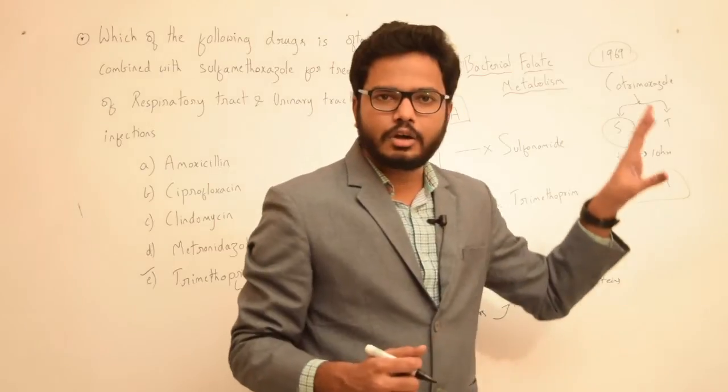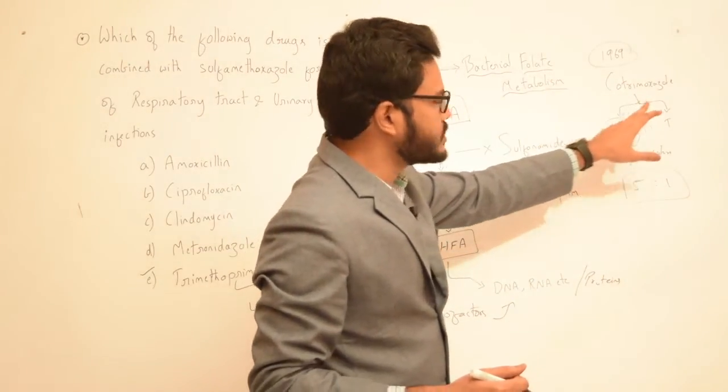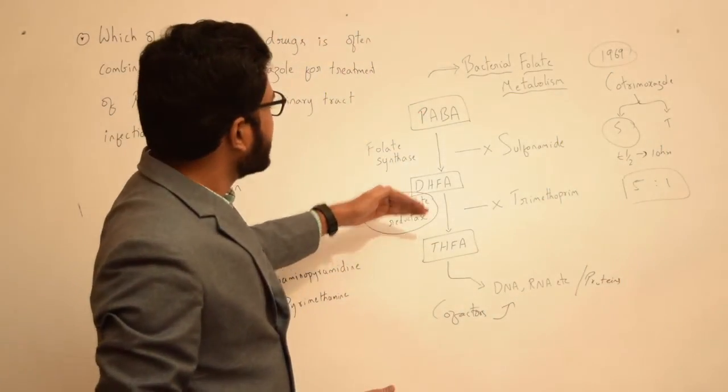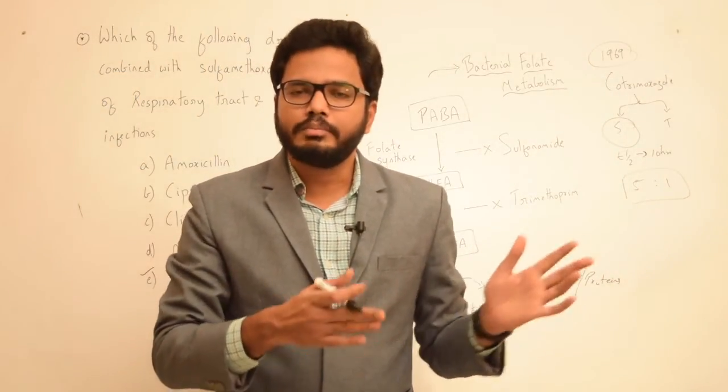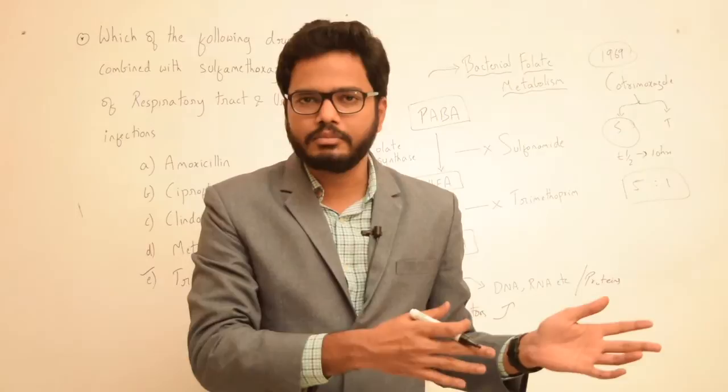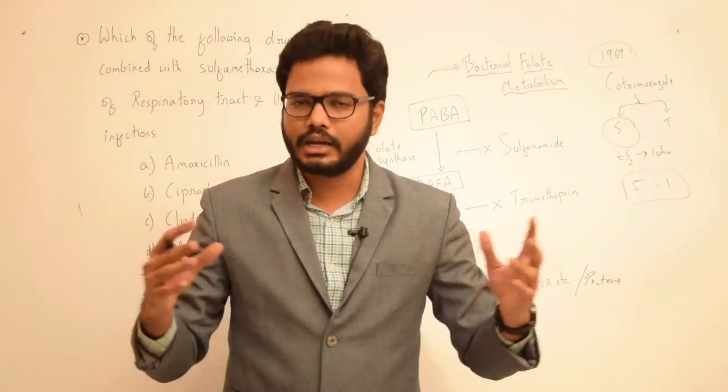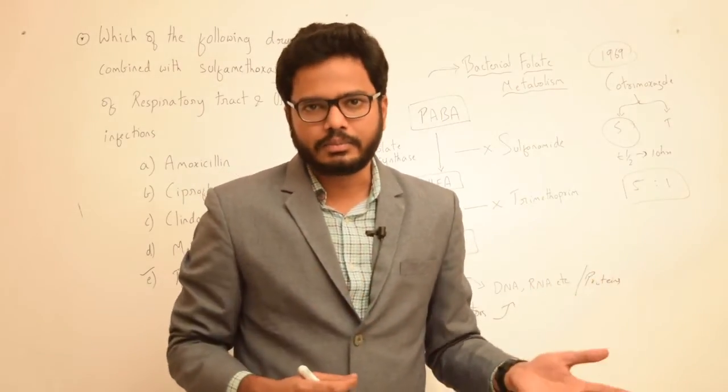Cotrimoxazole is a fixed combination of sulfamethoxazole and trimethoprim which has sequential blockade in the bacterial folate metabolism. These drugs are selective to the bacterial folate enzymes rather than the mammalian enzymes, so the folic acid cycle in mammalian cells remains relatively undisturbed.